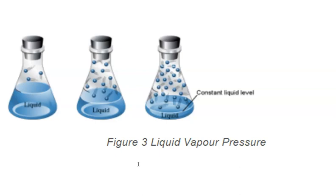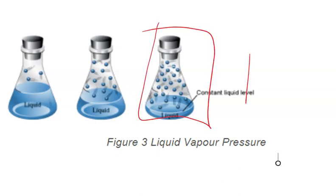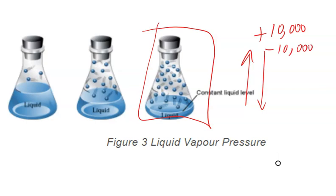At some point, the particles, which are moving in rapid and random motion, will bounce around and end up going 'kaplunk' back into the liquid. So initially gas is being formed only, and then the gas is being formed faster than the liquid is being formed. But then on the right side we have equilibrium, in which the rate at which gas is being formed is equal to the rate at which liquid is being formed.